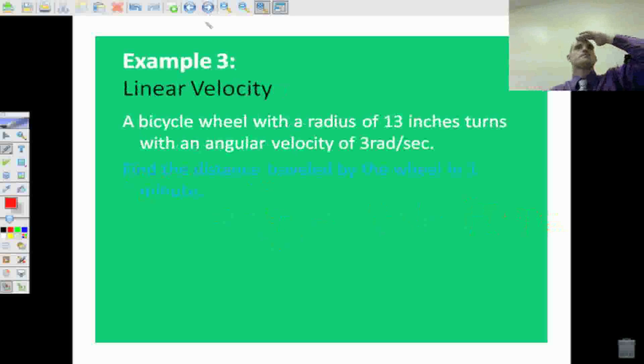We use this to find extra stuff. So here's an example of a problem, like something we might see on the homework, or on a quiz, or a test, that's going to be using this to extend our information about the concept. It says a bicycle wheel with a radius of 13 inches turns with an angular velocity of 3 radians per second. So this is omega. And so find the distance traveled by the wheel. Not angular. Distance traveled.